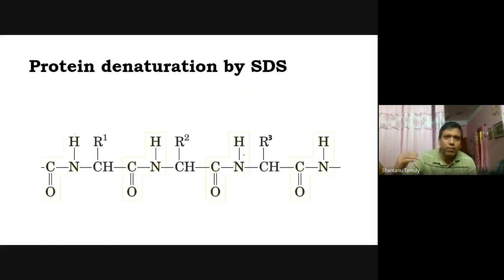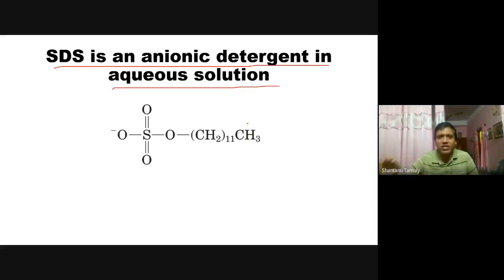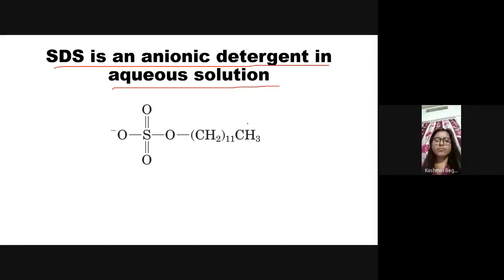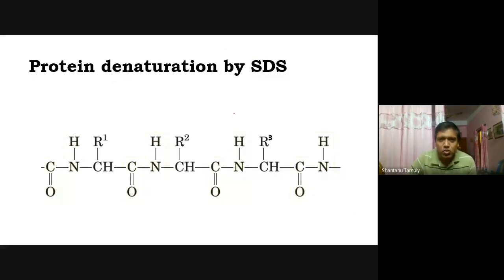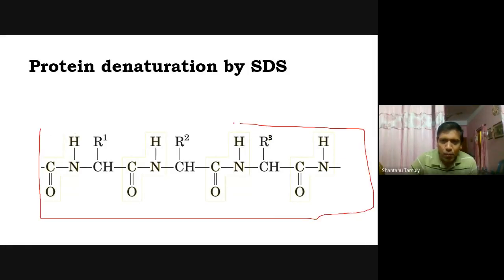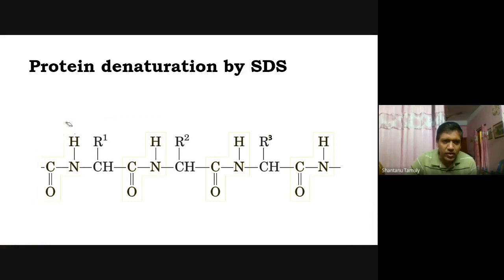The function of SDS in SDS-PAGE is that SDS causes the denaturation of the protein. The native structure of the protein gets destroyed and the protein molecules open into a straight chain form. SDS causes the denaturation. Proteins are made up of amino acids, and now let me show how it works.